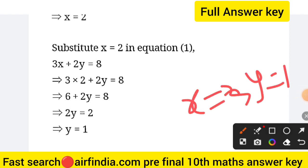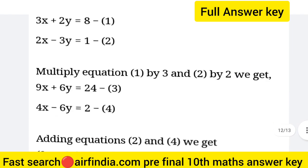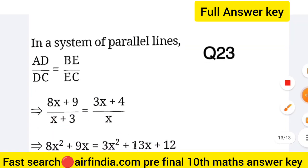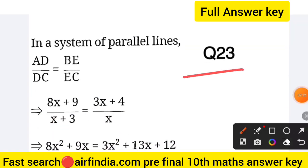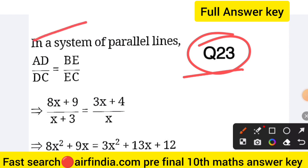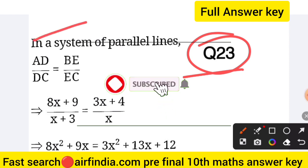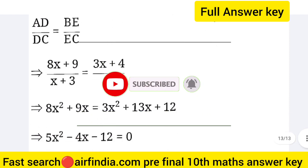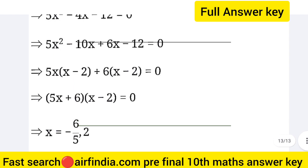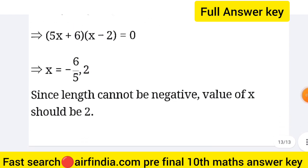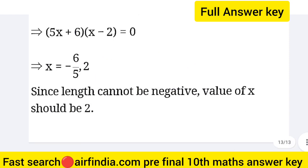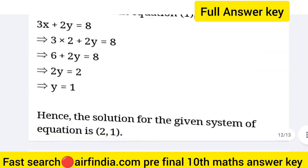Question 23: in a system of parallel lines, AD upon DC equals B upon AC, and 8x plus 9 upon x plus 3 equals x plus 4 upon x. Solving this gives x values of minus 6 and 2. Since length cannot be negative, the value of x should be 2. Your answer is 2.